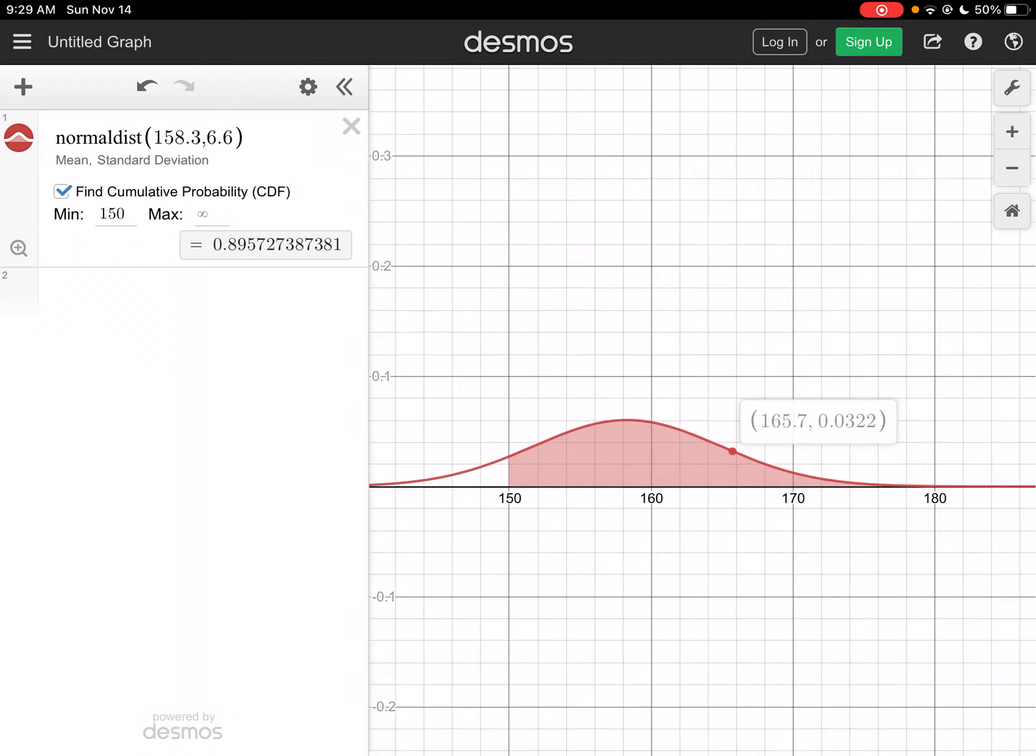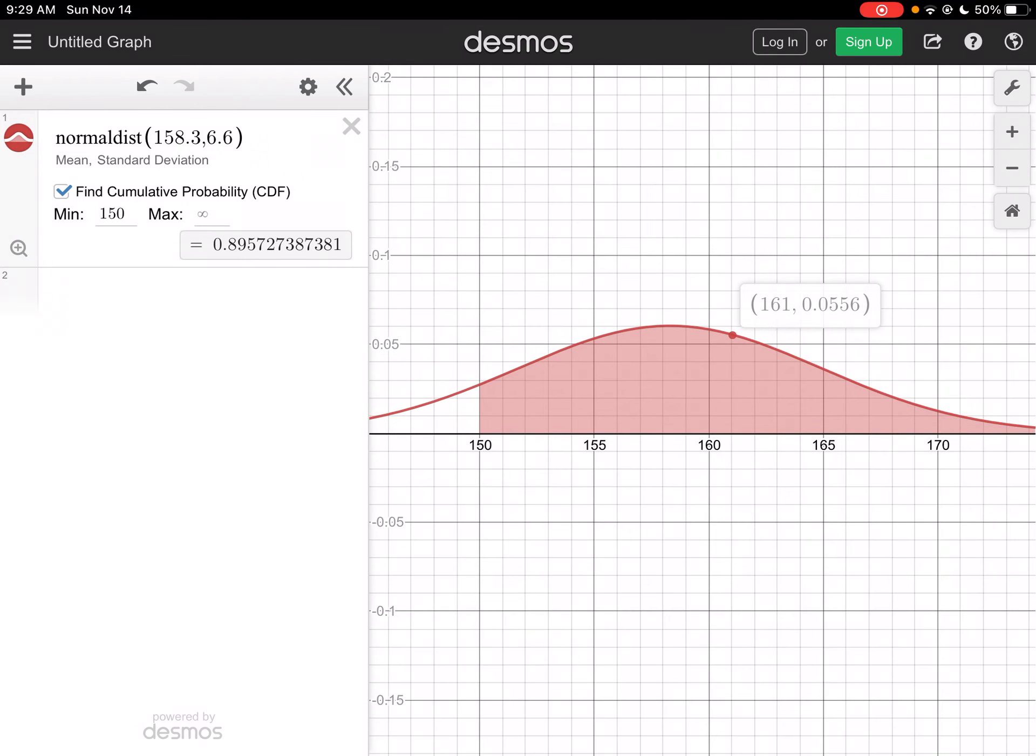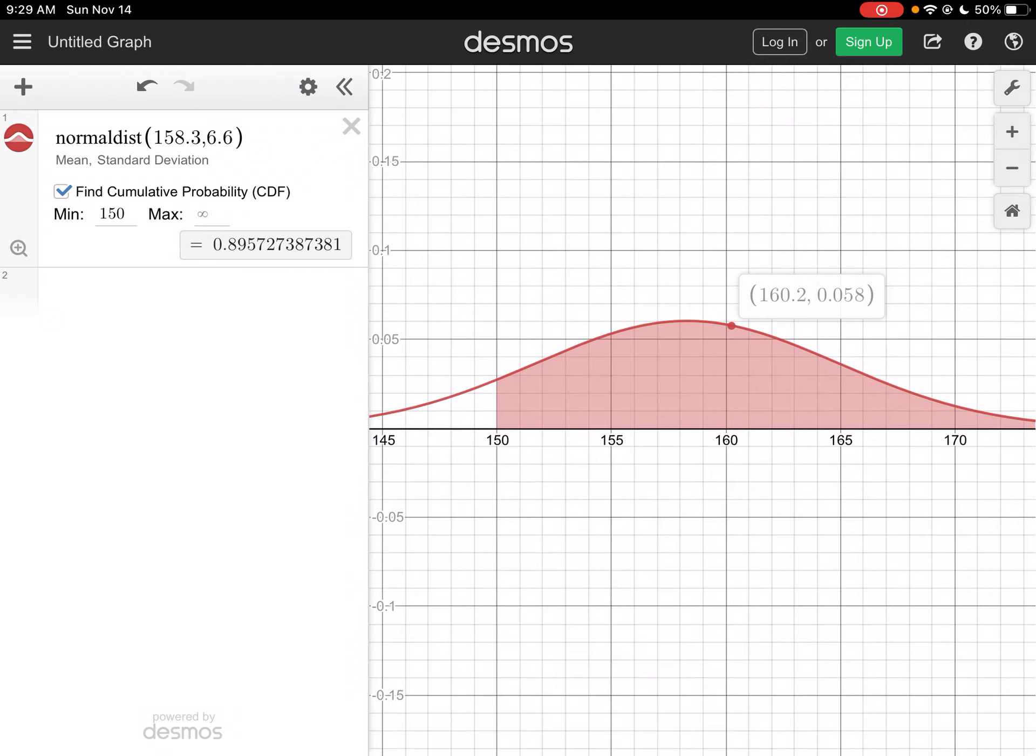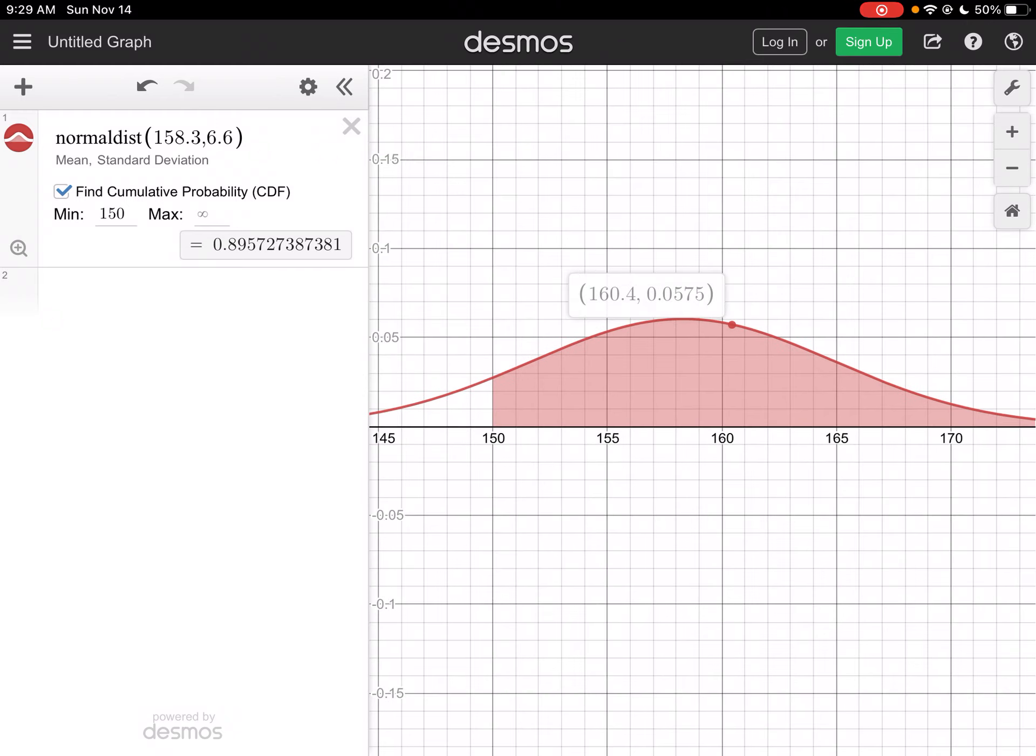Now we can see our curve then. And there we have it. And actually it plots it right on our curve for us right here. So here's 150, and we get 0.89. That's kind of cool. I like that.